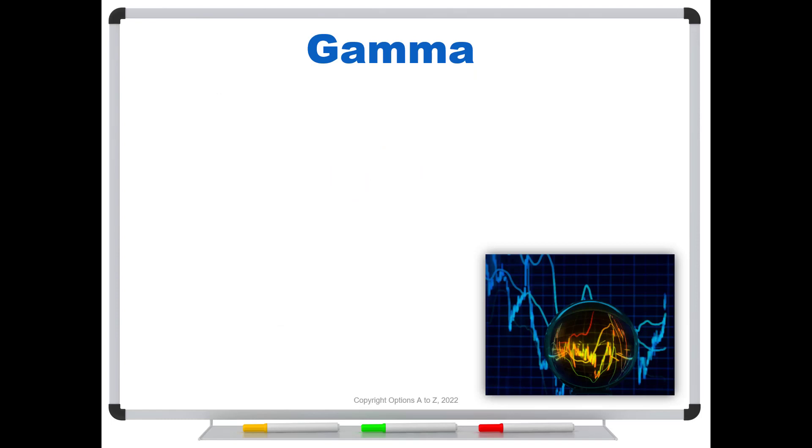So let's start with a quick definition of gamma. Recall that gamma shows the rate of change of your delta. This is the only Greek, at least of the basic Greeks, that doesn't talk about the change of your options price. Instead, it's talking about the change of a different Greek, in this case, delta.